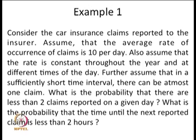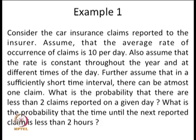Further assume that in a sufficiently short time interval, there can be at most one claim. If you think of a very small interval — like one minute or five minutes — relative to the average rate of 10 per day, in that sufficiently small interval there is a possibility of only a maximum of one claim being reported. The question is: what is the probability that there are less than two claims reported on a given day, i.e., either no claim or exactly one claim? Also, what is the probability that the time until the next reported claim is less than two hours?